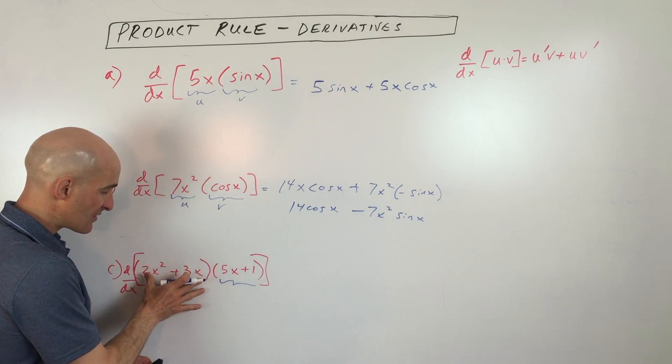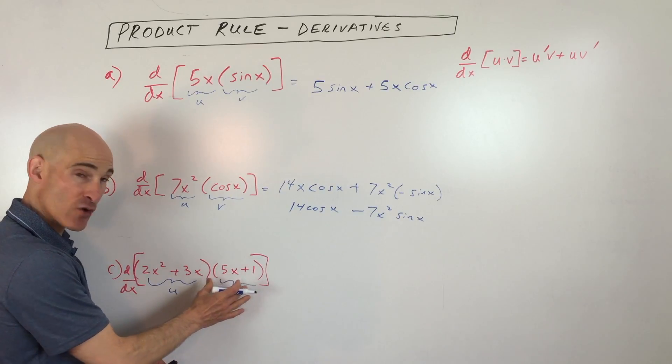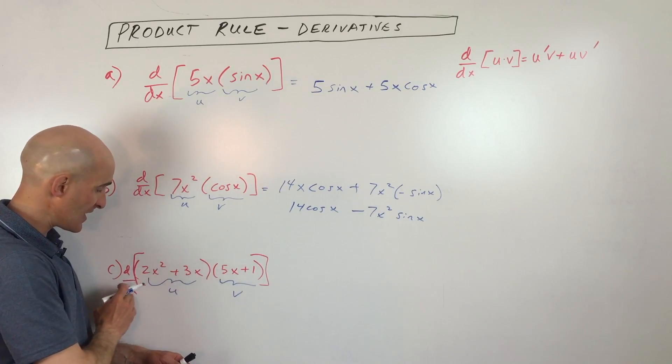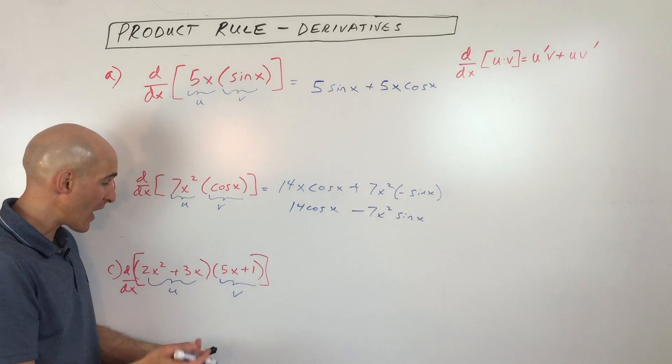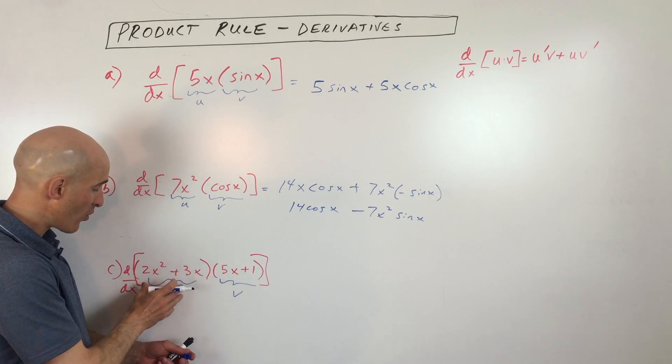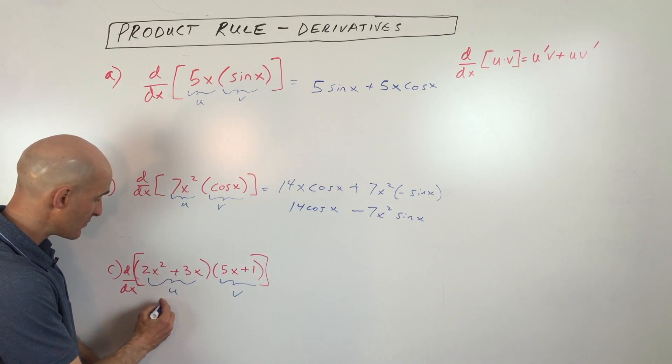So basically what I'm trying to say is that it's not always necessary to simplify first. You could just go ahead and say, let's take this first quantity, call that u, the second quantity v, they're multiplied together, we're taking the derivative, we're going to use our product rule because they're multiplied.